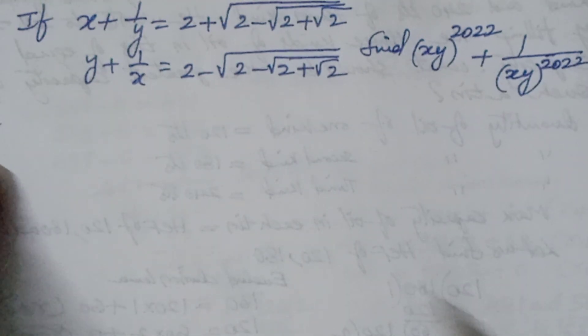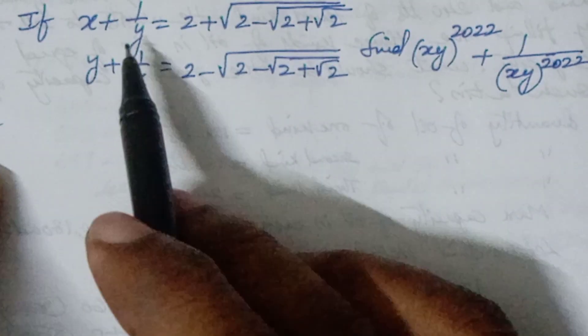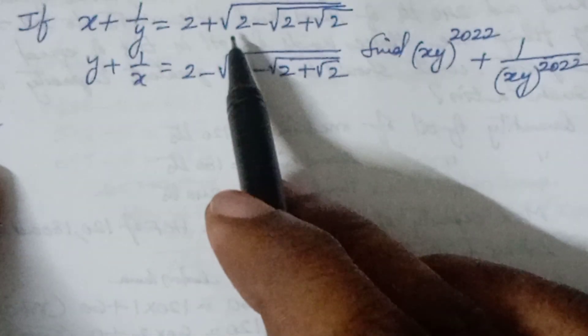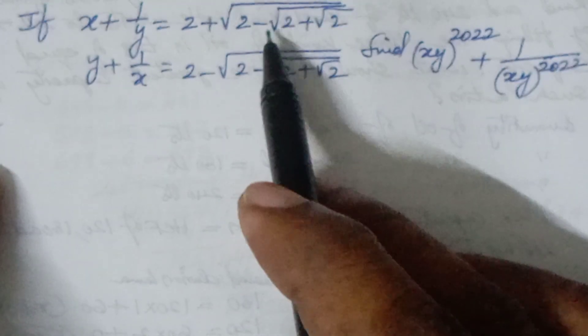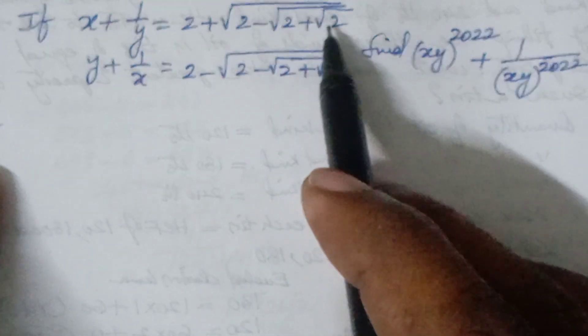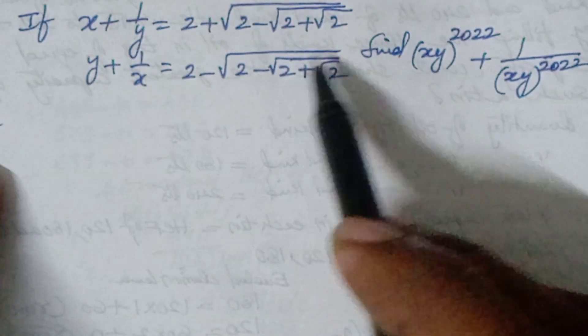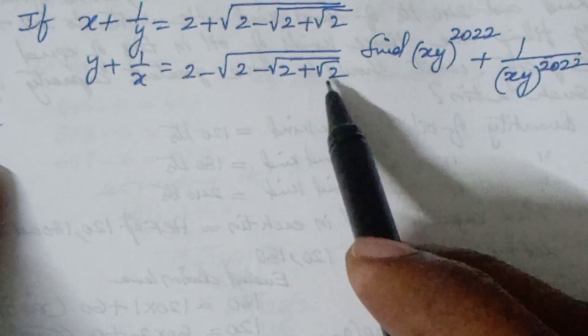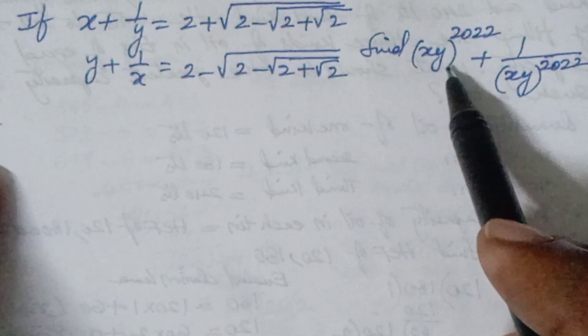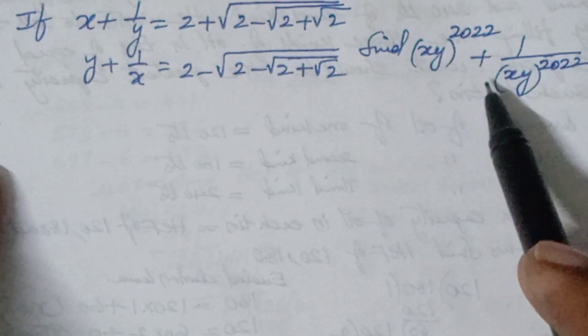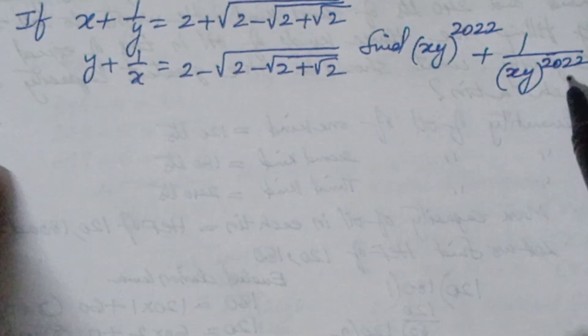Hello children, welcome to IONCGMAX. The question is given: if x plus 1 by y is equal to 2 plus root of 2 minus root 2 plus root 2, and y plus 1 by x is equal to 2 minus root 2 of minus root 2 plus root 2, find xy to the power of 2002 plus 1 by xy to the power of 2002.